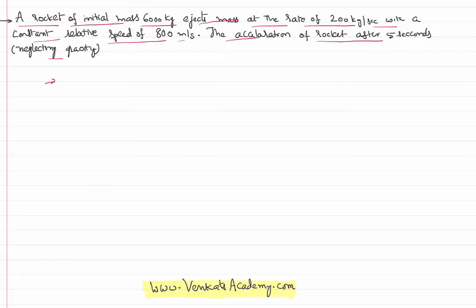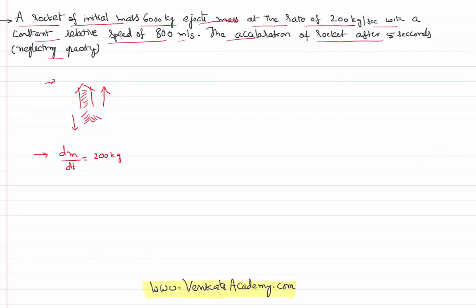It is given in the problem that there is a rocket moving in the forward direction. Simultaneously, the fuel is moving in the downward direction. The rate of mass of fuel lost per second is given as 200 kilograms. And we want the acceleration of the rocket after 5 seconds, meaning the rocket is losing its mass for 5 seconds.